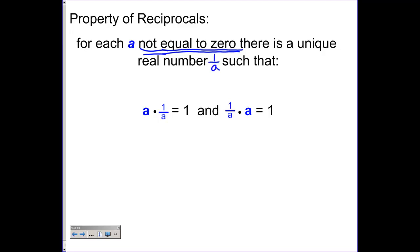There is a unique real number, 1 over a, such that a times 1 over a is equal to 1. And that 1 over a times a is equal to 1. And it always comes out to a positive 1. Reciprocals, when multiplied together, always come out to a positive.